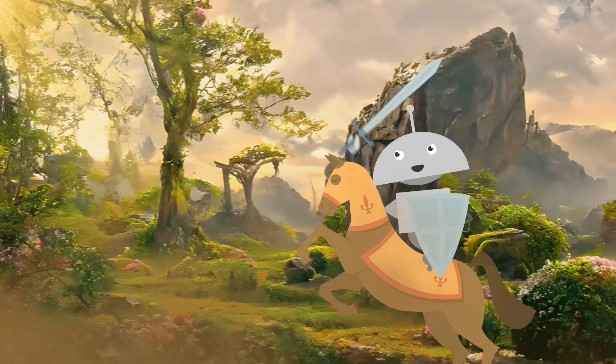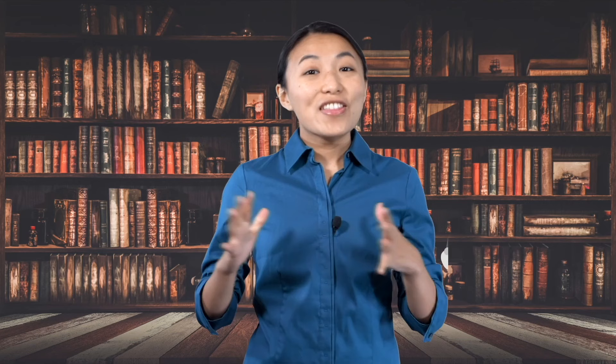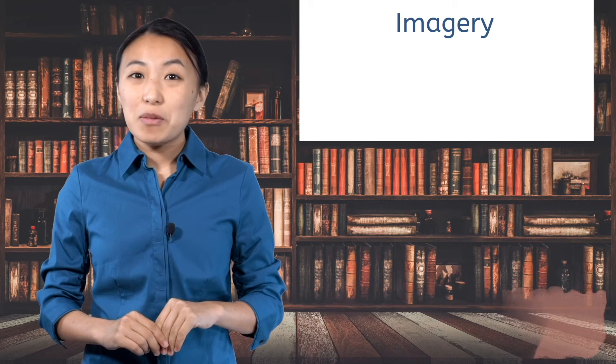Let's go for it! The first category of elements of poetry is imagery. Imagery, along with many of the other elements that were so important in fiction, will be just as important in poetry. So if you need a refresher, go back and watch the Elements of Fiction video now.